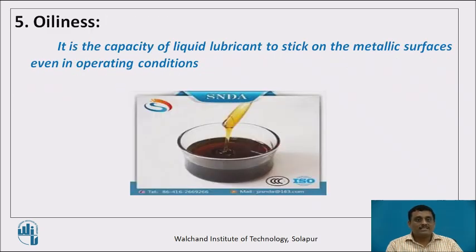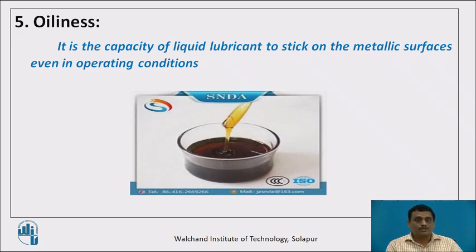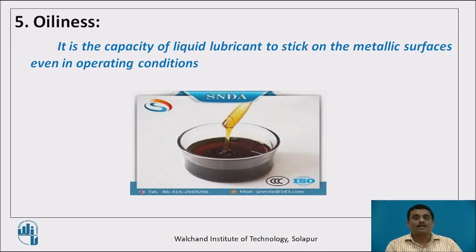Another property is oiliness. Oiliness and viscosity are different properties — viscosity indicates the thickness of the oil, whereas oiliness indicates the capacity of the liquid to stick on the surface even under operating conditions. Operating conditions may be extreme: high speed, high load, high temperature, or machines operated with jerks. In such cases, viscous oil alone does not protect the metal, so we require the lubricant to be sufficiently oily. Oiliness is defined as the capacity of liquid lubricant to stick on metallic surfaces even under operating conditions.